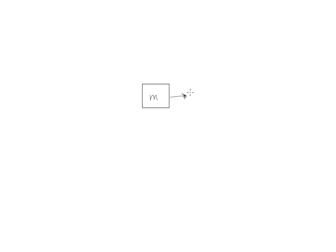How do you change an object's state of motion? It's simple — you just need a net or unbalanced force. Newton's second law states that the acceleration of an object is equal to the net force applied to that object divided by its mass. You can see that the net force and acceleration are directly proportional, so the larger the force acting on the object, the larger its acceleration.